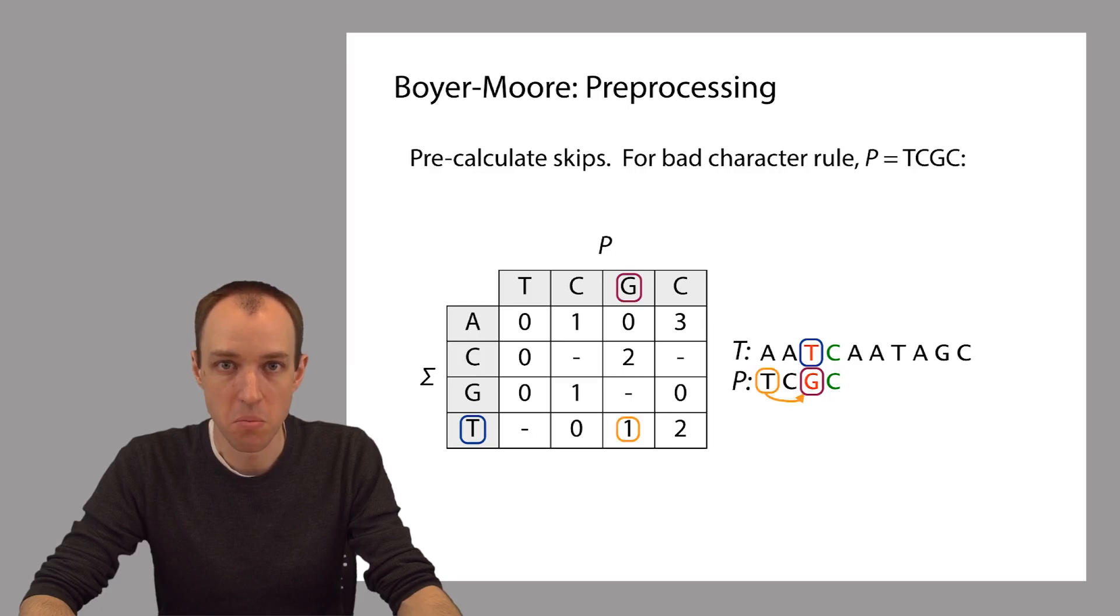And we'll find a number there. And that number is the number of alignments that we can skip according to the bad character rule. So in this case, we can skip one alignment, which is to say we can shift P over by 2 according to the bad character rule.